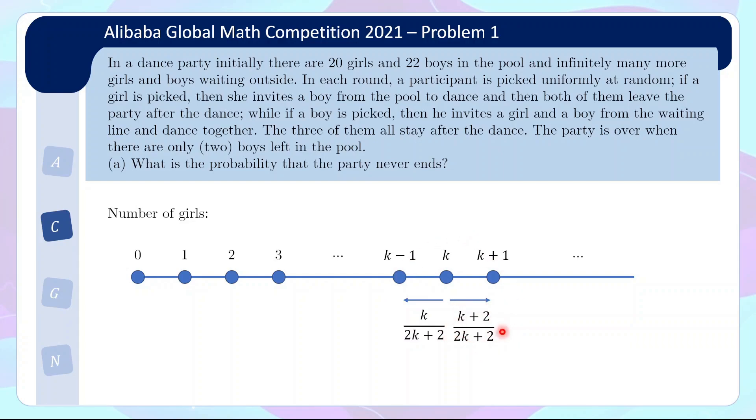And then conversely, there's a probability of K plus 2 over 2K plus 2, where you pick a boy. And so you add a girl and a boy, which means you move to the right by one step to the note K plus 1. And the question is, what is the probability that you never reach the note 0?